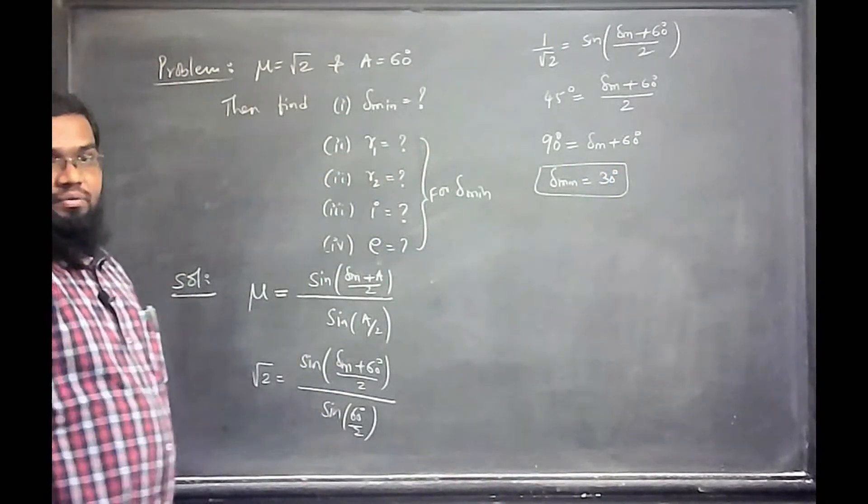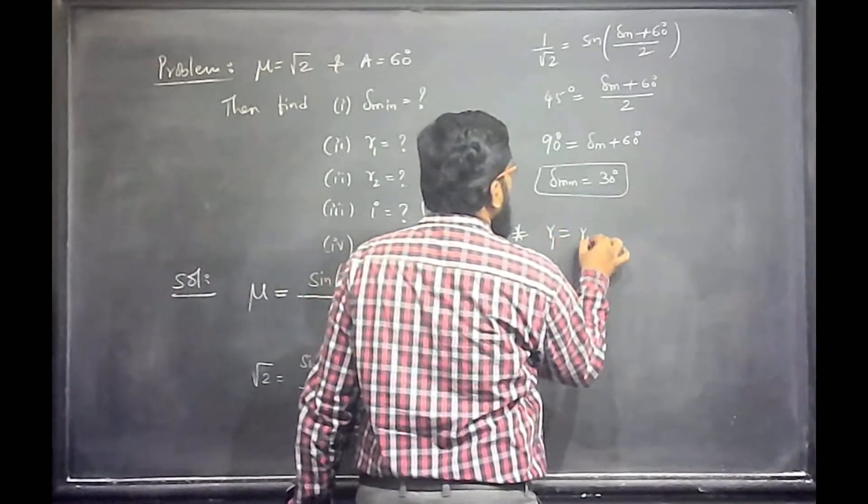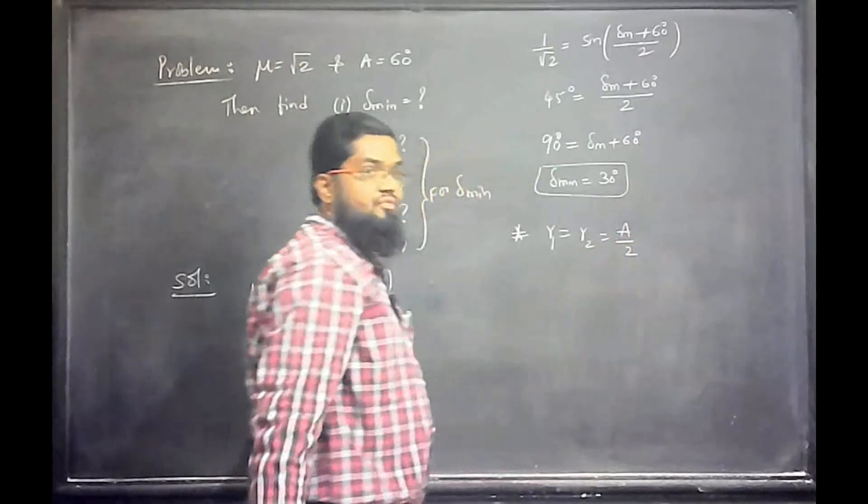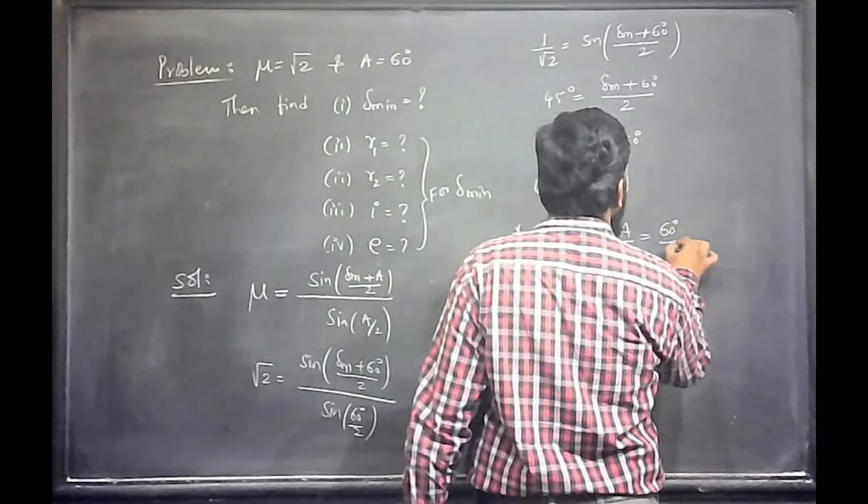What about R1 and R2? R1 is equal to R2, that is equal to half of A. Half of A is 60 degrees by 2, that is equal to 30 degrees.